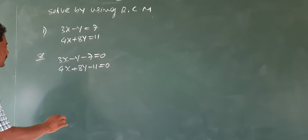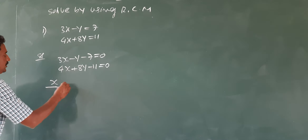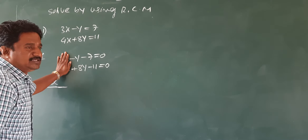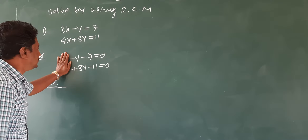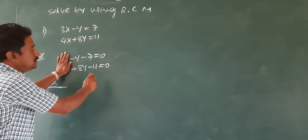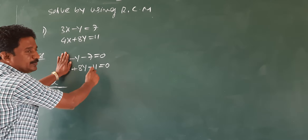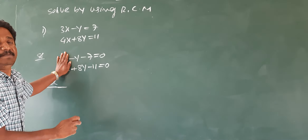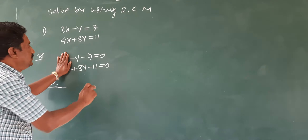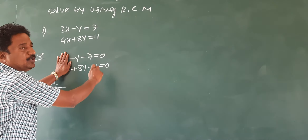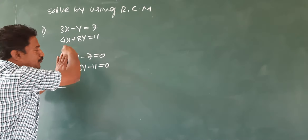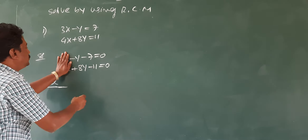So, x by — firstly, you leave the x column, you leave these x terms, and consider these four remaining terms. You multiply only numbers — you should not consider variables. Multiply: product of these two minus product of these two.